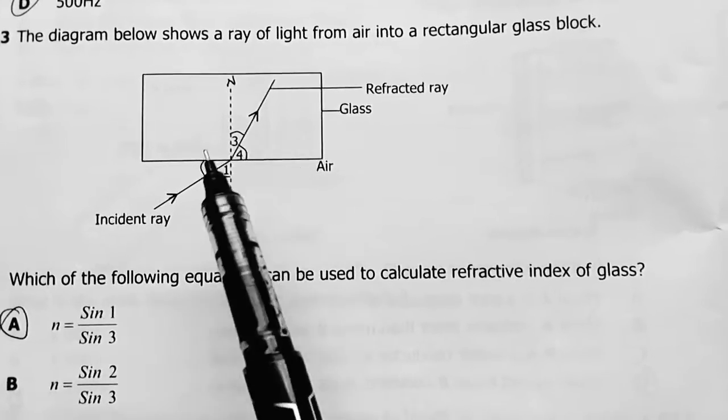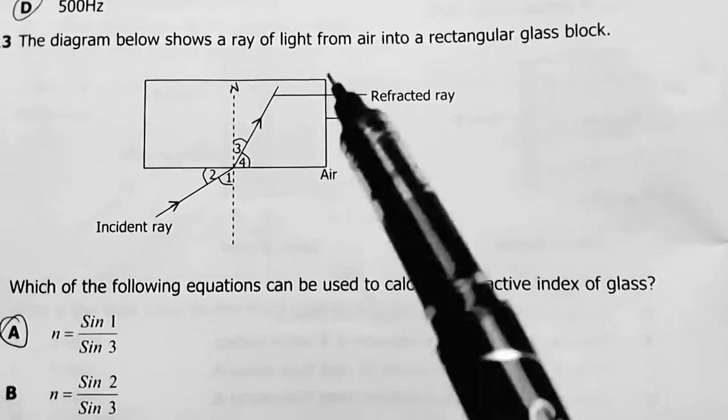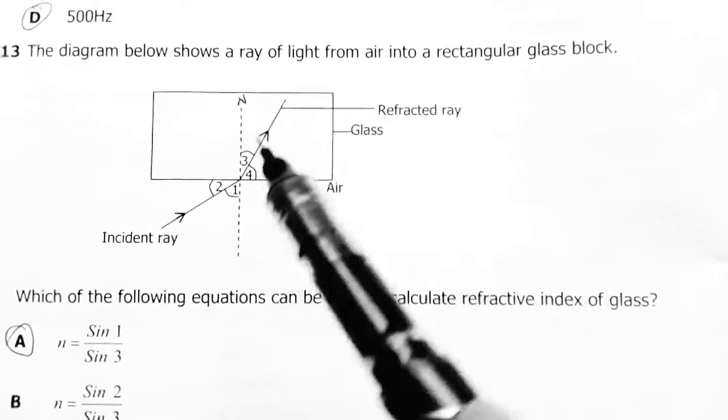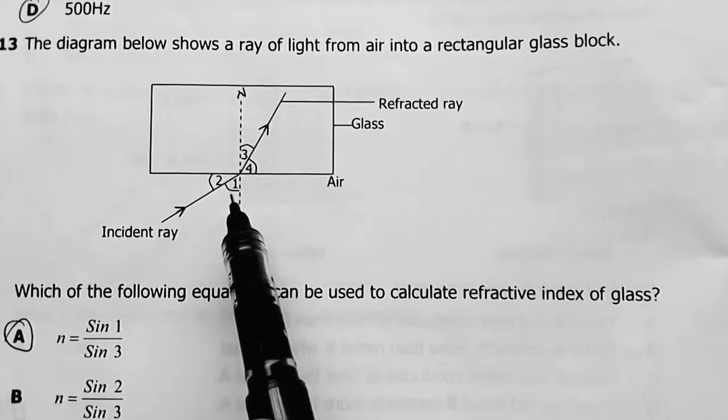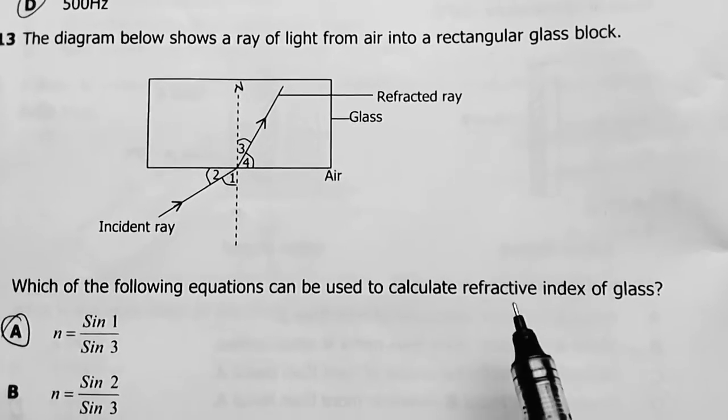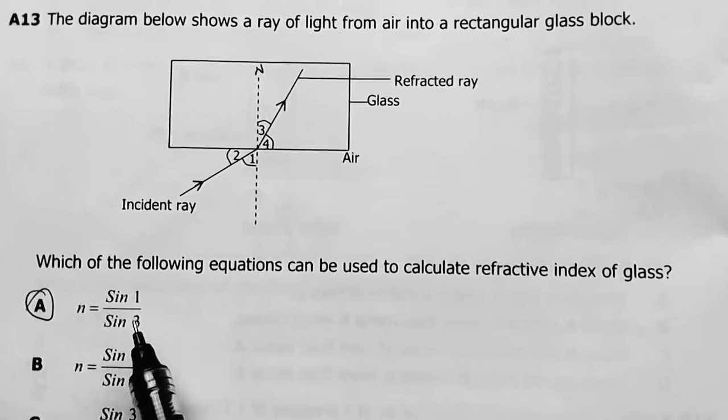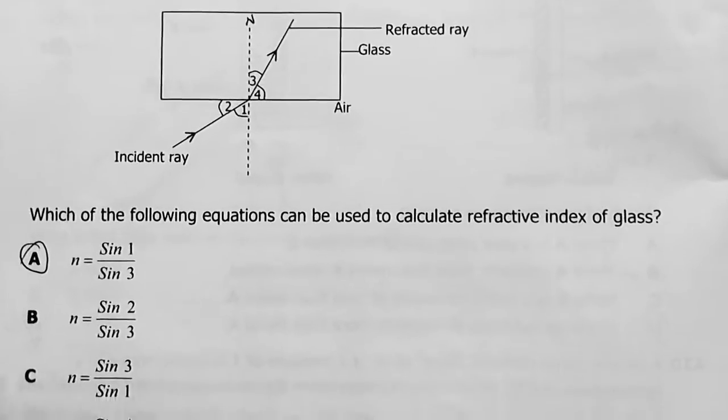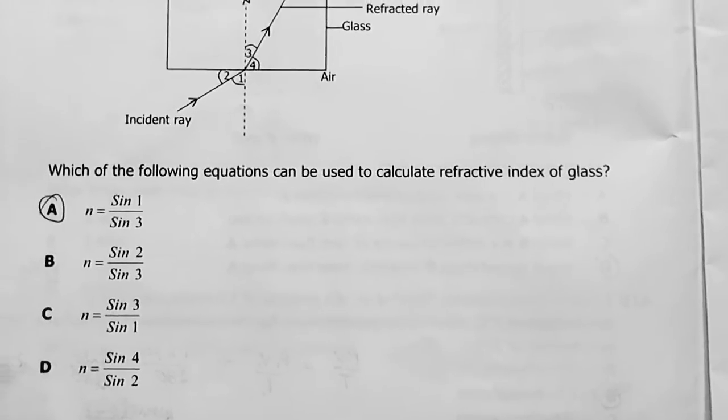So this would be our angle of incidence. And even if the arrows were pointing outwards, like this one pointing outwards and even this one pointing outwards, we would still take this one as our angle of incidence if we were to calculate for refractive index. So it's going to be sin 1 over sin 3. The answer there is A. That is called Snell's law.